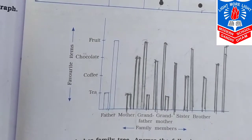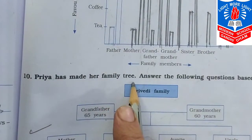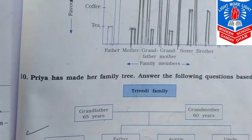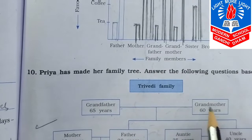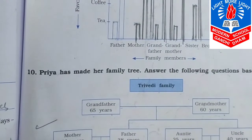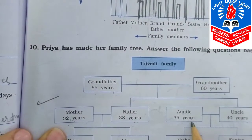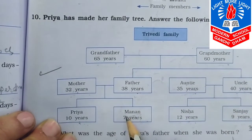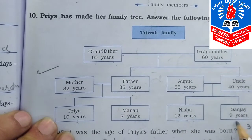Now question number 10. Priya has made her family tree. Answer the following questions based on it. Trivedi family: Grandfather 65 years, Grandmother 60 years. Mother 32 years, Father 38 years. Auntie 35 years, Uncle 40 years. Priya 10 years, Manan 7 years, Nisha 12 years and Sanjay 9 years.